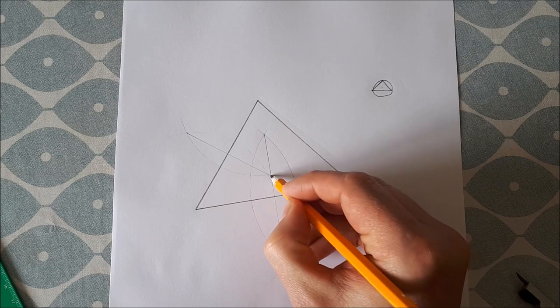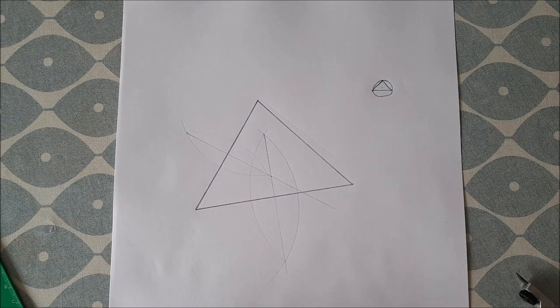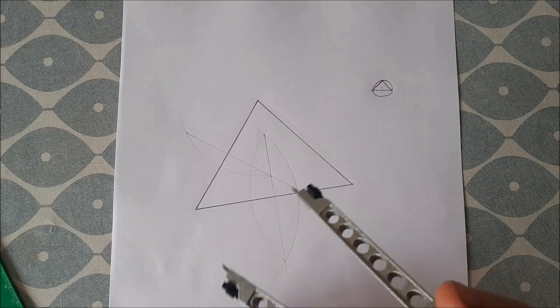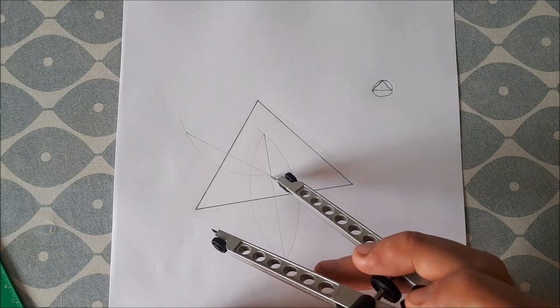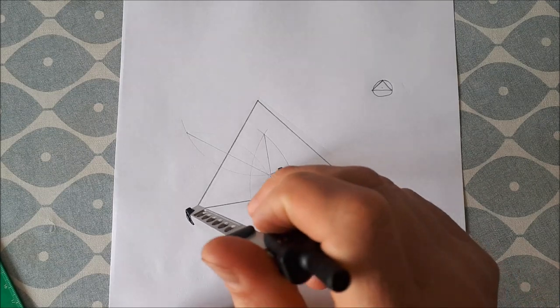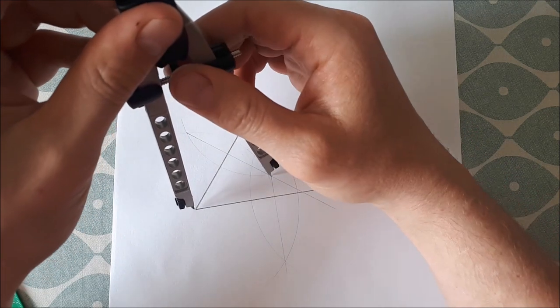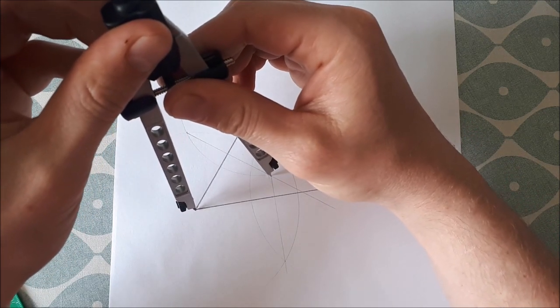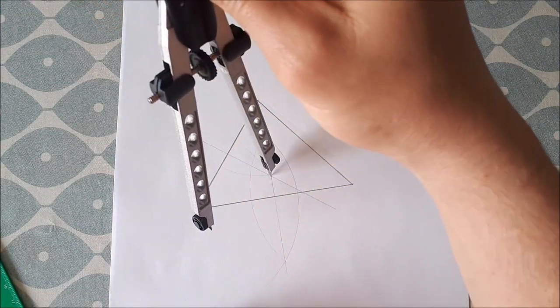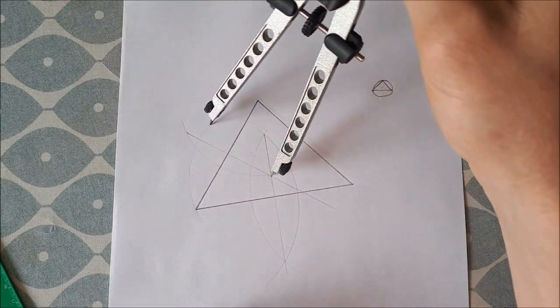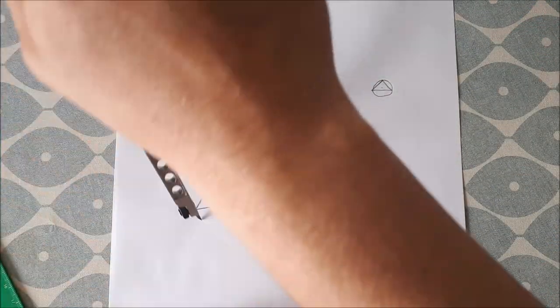That's the center of the circle we're going to draw. To draw the actual circumcircle, put the tip of your compass at this point and move the compass out until it's exactly lined up with one of the vertices. Hopefully if we've done it right, when we draw our circle it'll go through all three vertices.